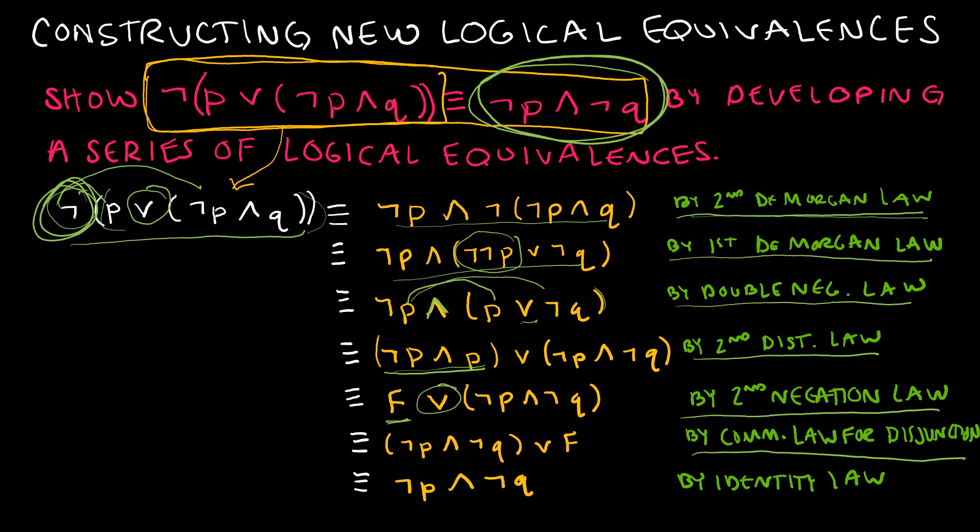It says commutative law for disjunction because obviously we're dealing with an OR which is a disjunction. And the reason that I did that is because the identity law is written in this format with the FALSE coming second. And so we have to put it in that format to use the identity law. The identity law says if you have something OR false, it's whatever that something was. And so notice now I've ended up here at NOT P AND NOT Q, which is where I wanted to end up. So we showed this with the truth table and showed that it was in fact logically equivalent. But now this is just a little bit more secure way to do it because we're using all of our known identities or known laws that we can use with logical equivalences.